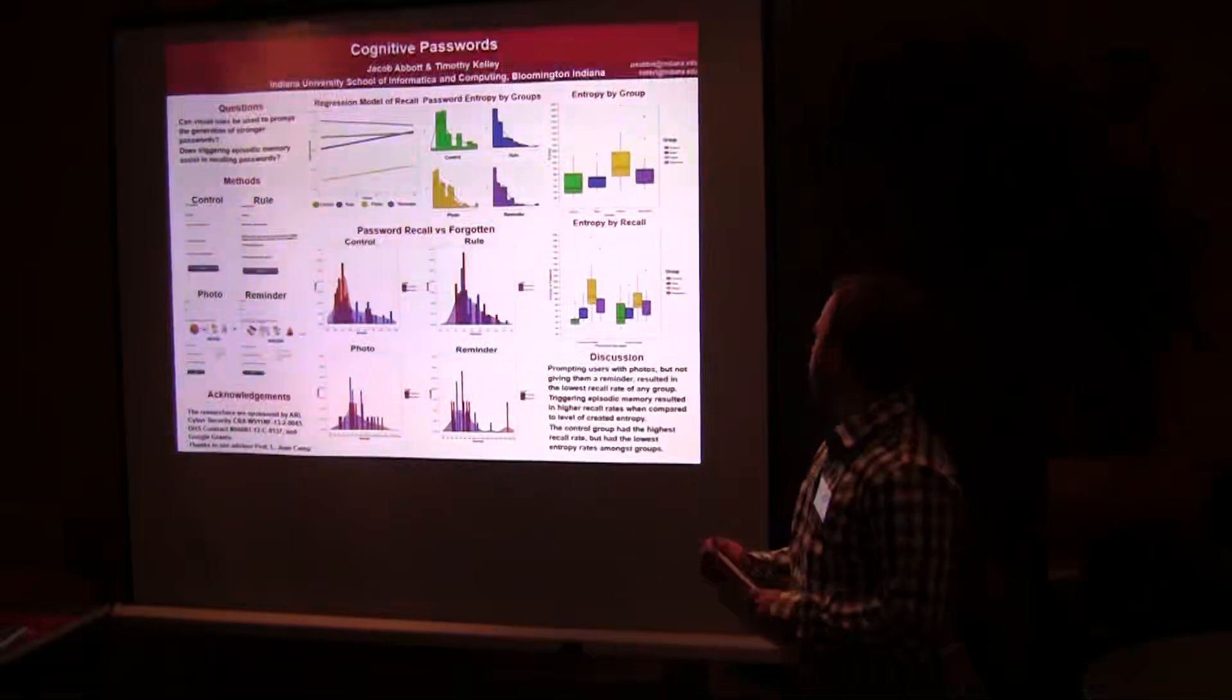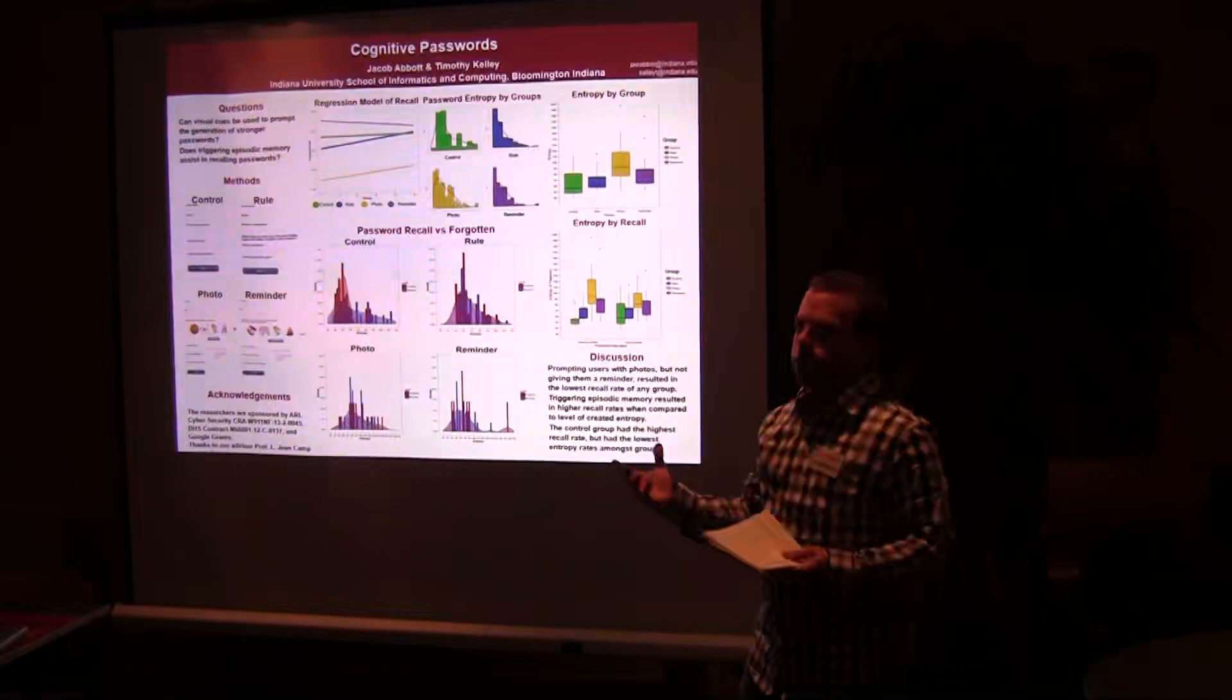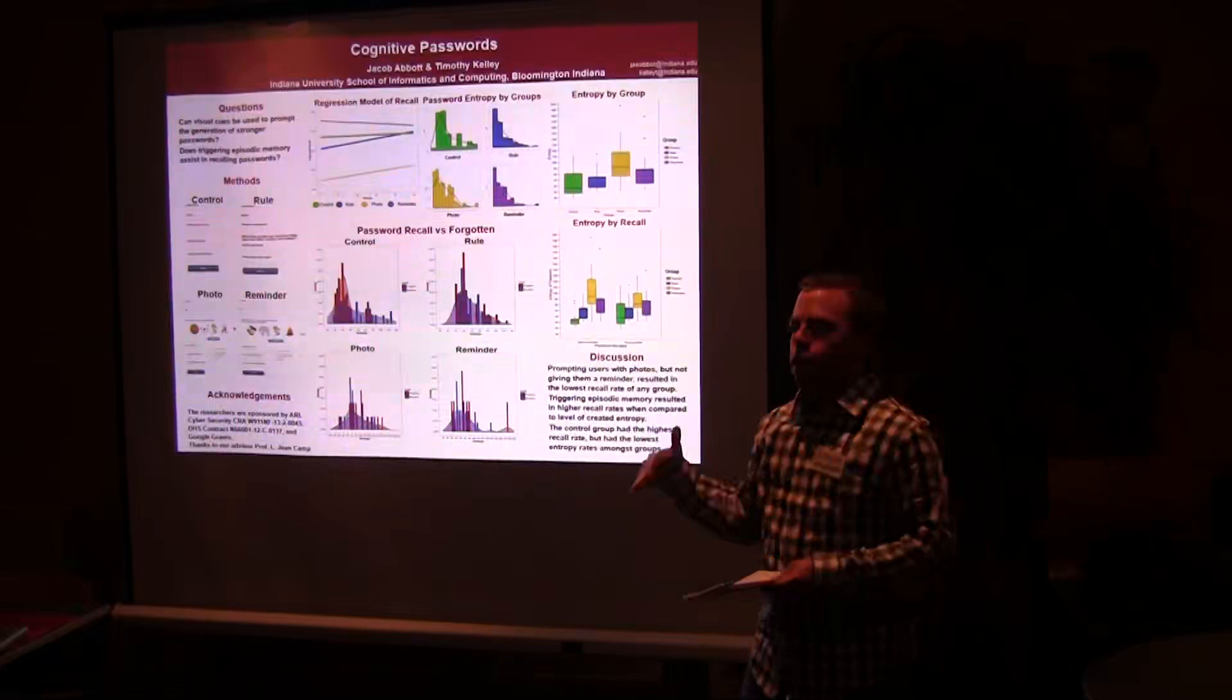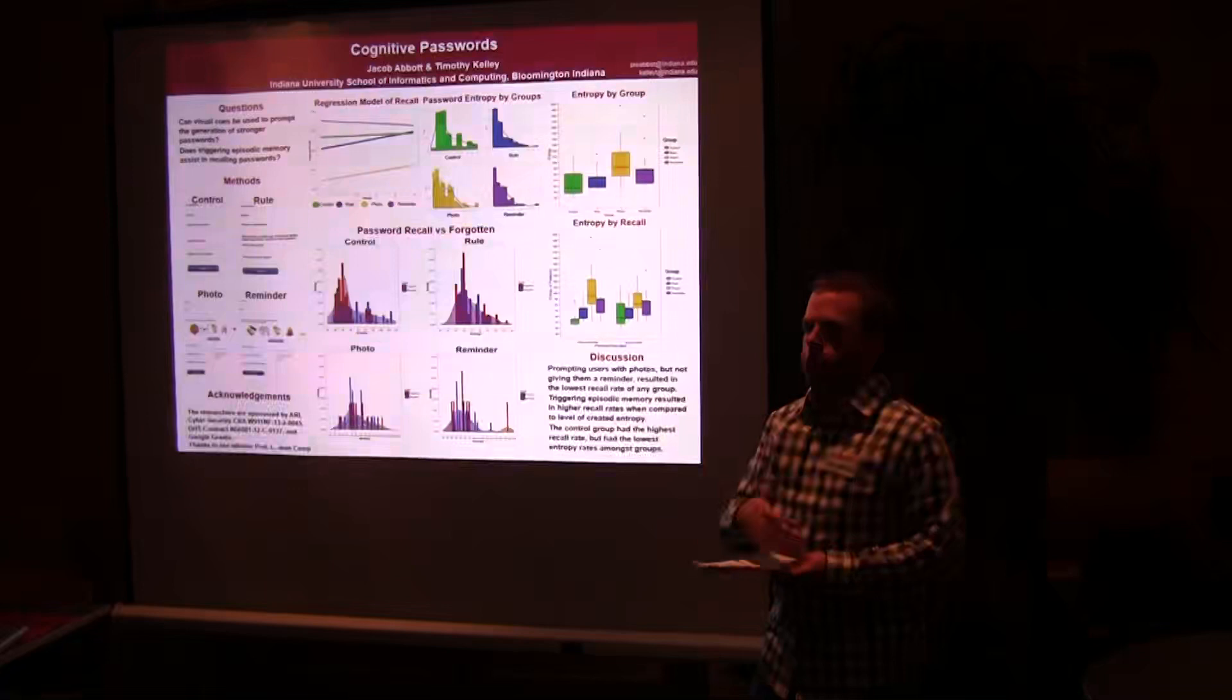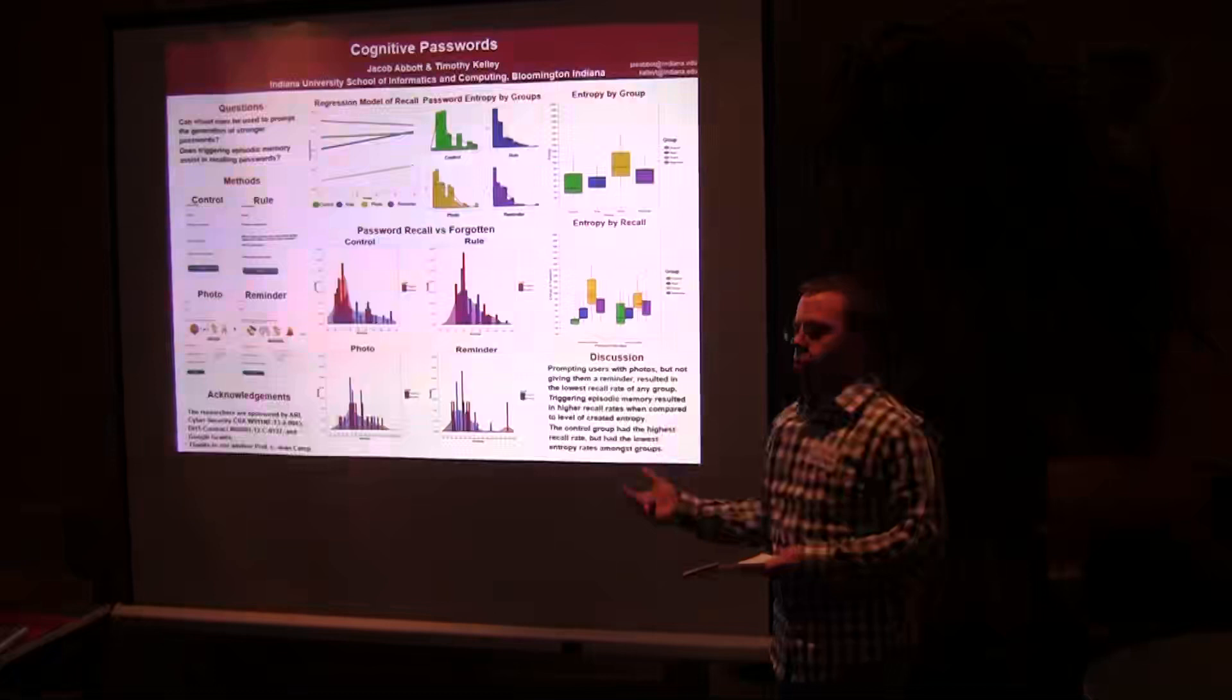So what we showed so far with the results that we've looked at is that you can see the entropy by group here. The control group as a whole didn't have very strong passwords. The characteristics that we found, their median was just barely over the minimum that the other groups had. Doing analysis on the characters used in the passwords that we received, the control group, only less than a third of them actually had passwords that would meet the requirements for the other three groups.